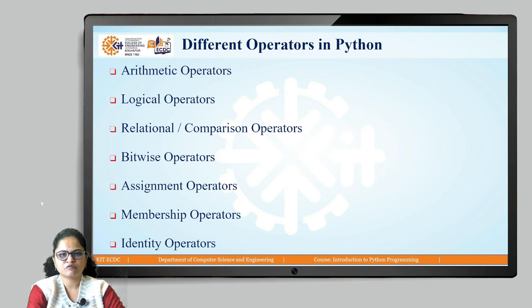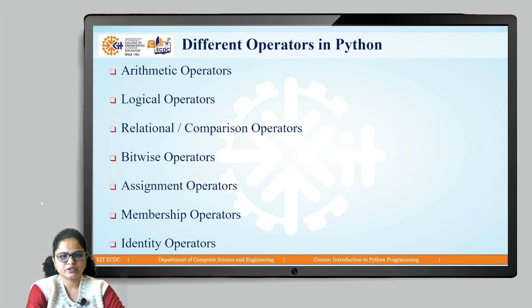These are the different types of operators available in Python. The first one is arithmetic operators, second is logical operators, then relational or comparison operators, bitwise operators, assignment operators, membership operators, and identity operators. So these are all seven types of operators available in Python.